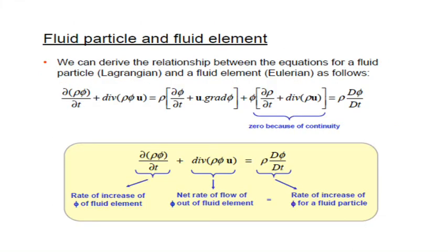To connect the fluid particle and fluid element in terms of Lagrangian and Eulerian: ∂(ρφ)/∂t + ∇·(ρφu) = ρ(∂φ/∂t + u·∇φ) + φ(∂ρ/∂t + ∇·(ρu)) = ρ Dφ/Dt. The term φ(∂ρ/∂t + ∇·(ρu)) becomes zero by continuity, so the remaining terms give back the continuity equation.